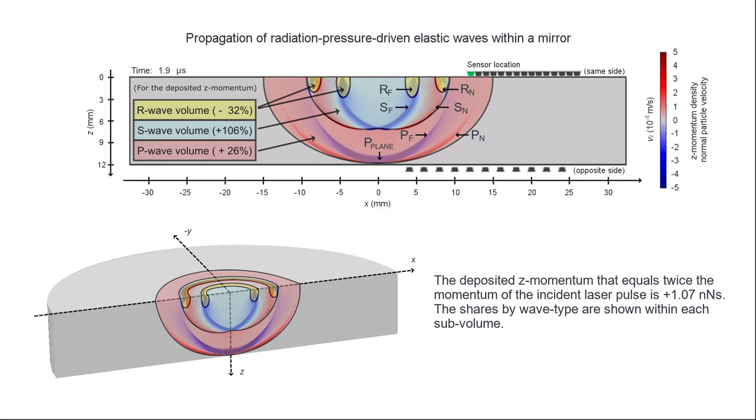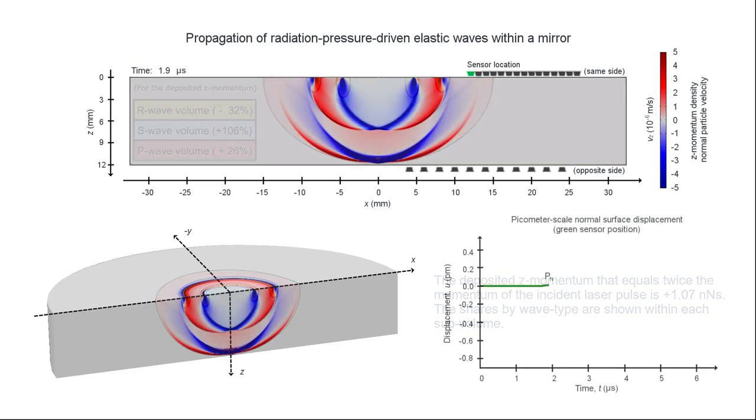Minus 32% of the wave momentum resides in the Rayleigh wave volume, 106% resides in the secondary wave volume, and 26% resides in the primary wave volume.